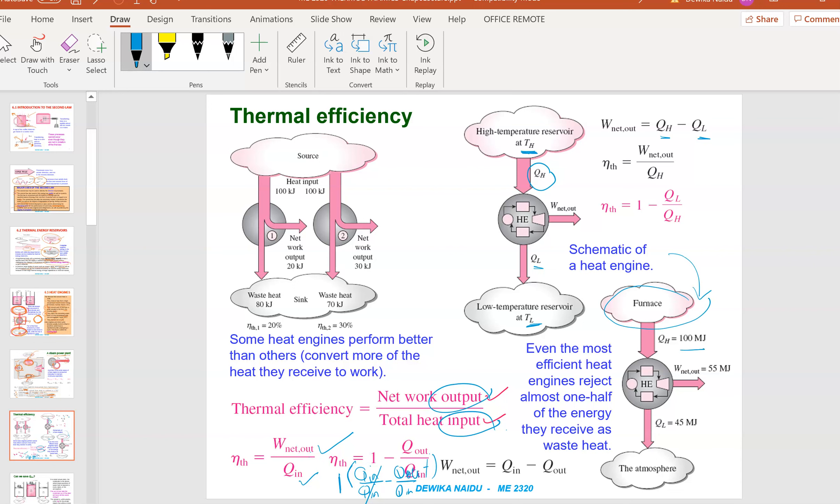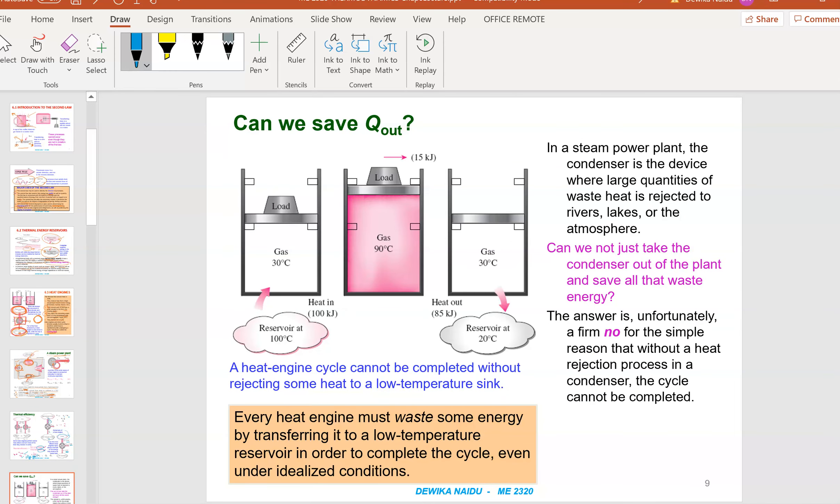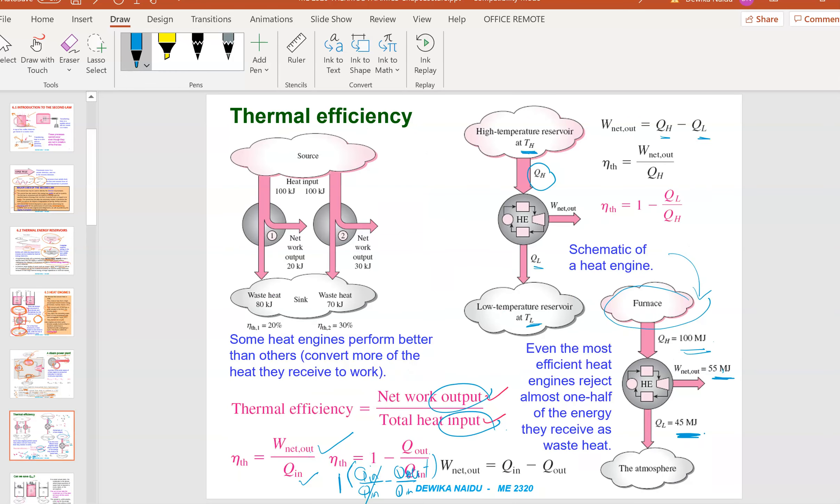This is a schematic diagram of a heat engine example. From the furnace, it supplies 100, but the net work out is 55. So how much is literally wasted? It's 45, because 100 minus 55 is 45. Can we save Q out? Can we try to make it zero? Can we do that? I'm going to talk about that shortly.